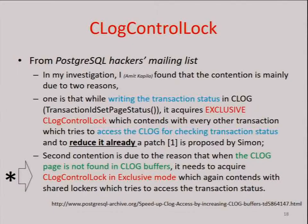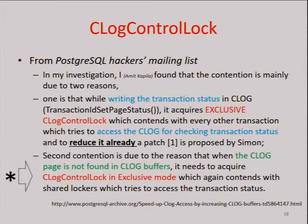This article posted to the PostgreSQL hackers' mailing list describes the role of C-Log control lock. C-Log control lock is necessary to ensure mutual exclusion among operations for C-Log. These include writing the transaction status, checking transaction status, and C-Log page replacement, which occurs when the C-Log page is not found in C-Log buffers.